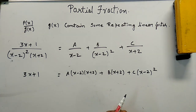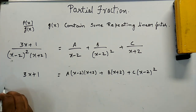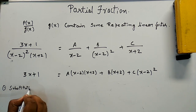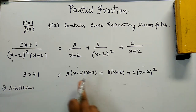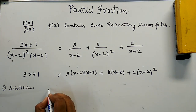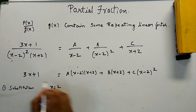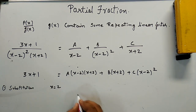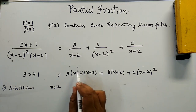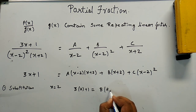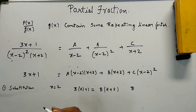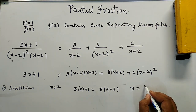I am solving this using the substitution method. I can simultaneously make two terms equal to zero by putting x = 2. Putting x = 2, the first and third terms become zero because (2 - 2) = 0. So we get B·(2 + 2) = 3·2 + 1 = 7, giving b = 7/4.